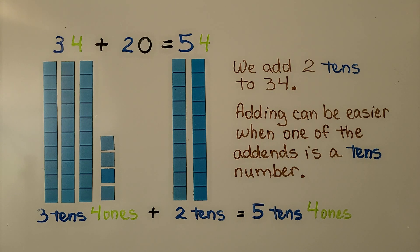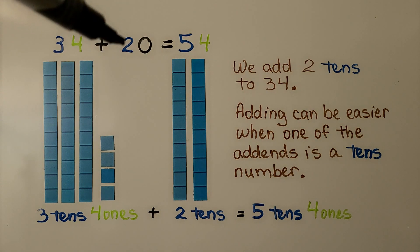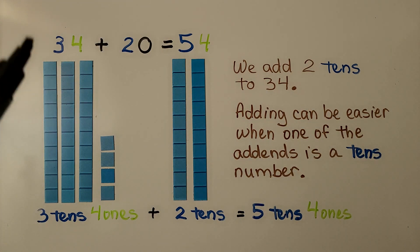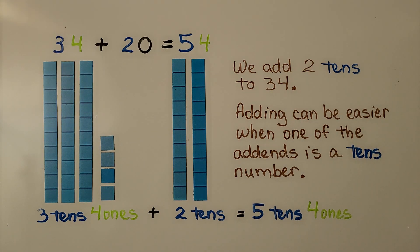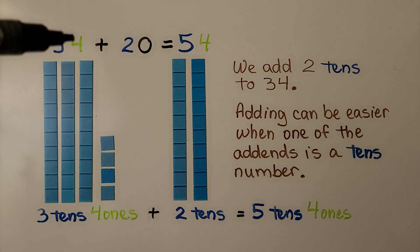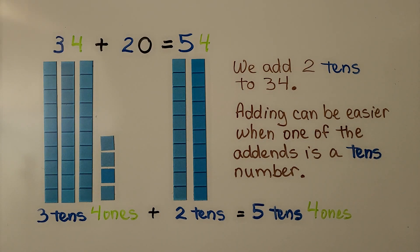Adding can be easier when one of the addends is a tens number. So 20 is a tens number. We can say 34, 44, 54 and count on by tens, remembering that there's a 4 in the ones place. 34 plus 20 is equal to 54.